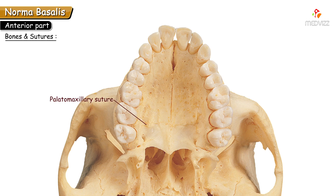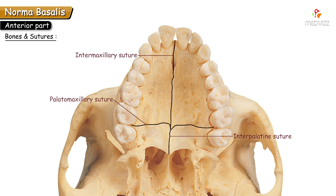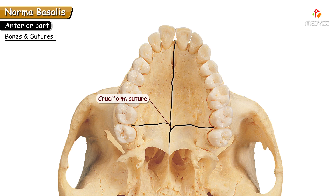The palatomaxillary suture is the suture between the anterior two-thirds and the posterior one-third — that is, between the palatine process of the maxillae and the horizontal plate of the palatine bone. If you join all these sutures together, it appears to be like a cruciform, so it is named the cruciform suture.